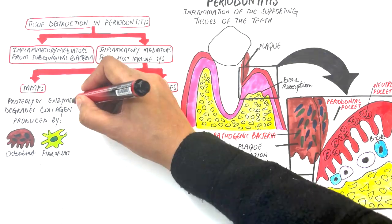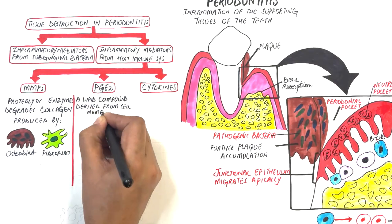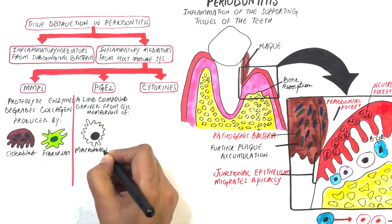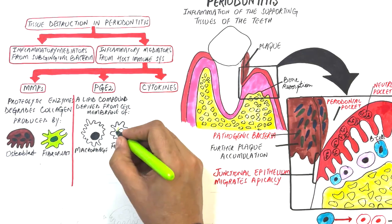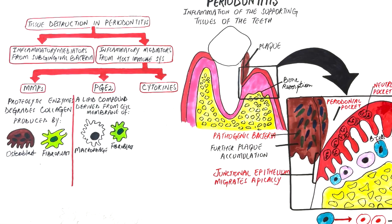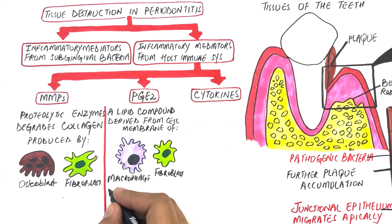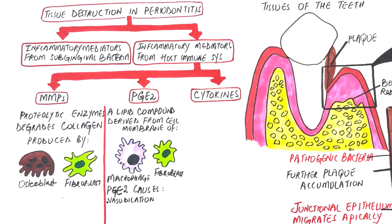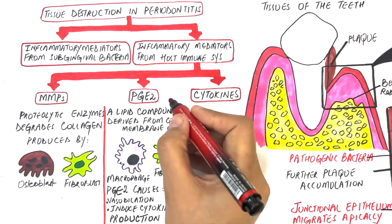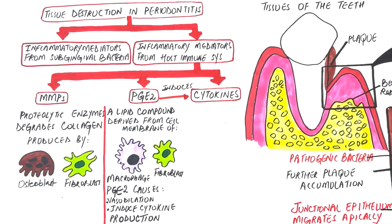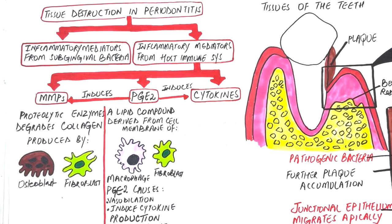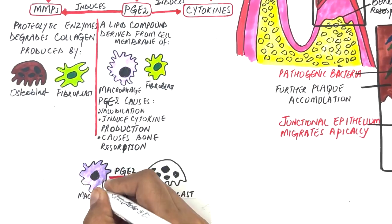PGE2 is a lipid compound primarily derived from plasma membranes of most cells, significantly by macrophages and fibroblasts in periodontal disease. PGE2 causes vasodilation and induces cytokine production from a variety of cells. It also results in the induction of MMPs and causes osteoclastic bone resorption by stimulating macrophages to turn them into osteoclasts, which are bone-resorbing cells.